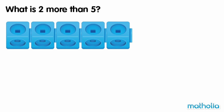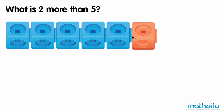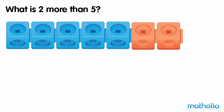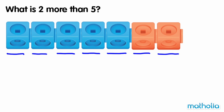There are five cubes in a row. Let's put two more cubes in the row. One, two. Now there are one, two, three, four, five, six, seven cubes in a row. Two more than five is seven.